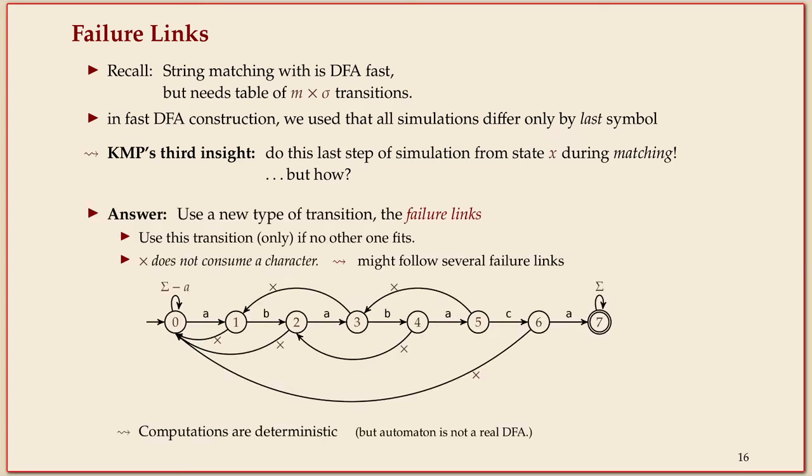The right notion for this is a failure link. That's a new type of link in the automaton, so it's an edge. But instead of a character, it has this cross mark as a label, which says no character matched.